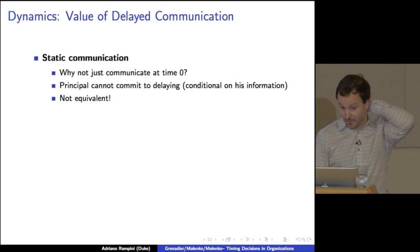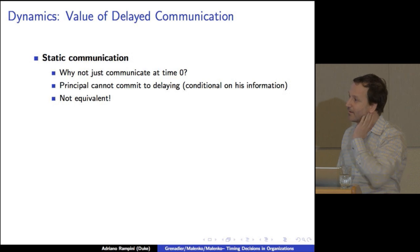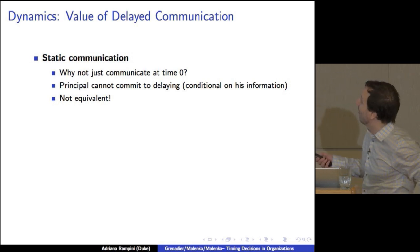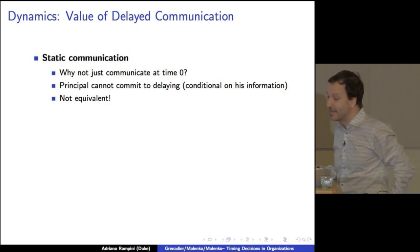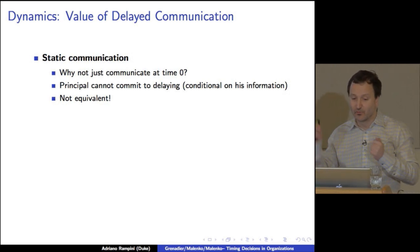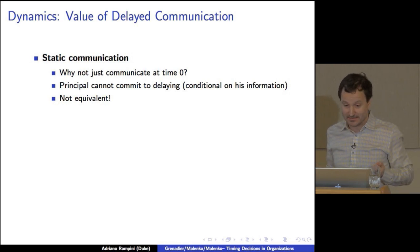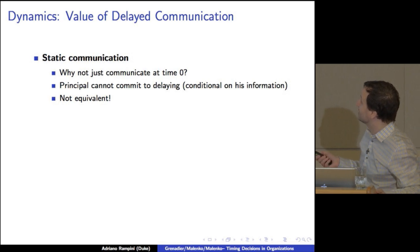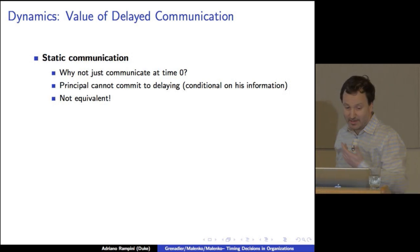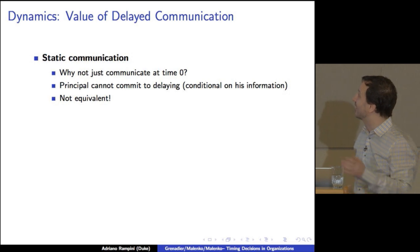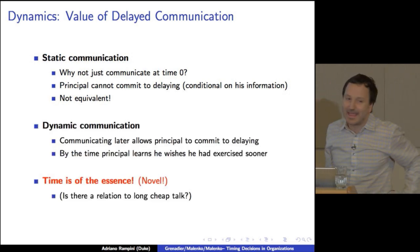All right. So let's think about the value of delayed communication. So one reaction you have is, I don't understand that the agent knows this state at time zero. Why not just communicate at time zero? Well, the issue is that the principal cannot commit to use information. So if you communicate at time zero, the principal will always do what is conditionally optimal if he has the authority to take the action. So the principal can never commit to delaying if conditional on his information exercise is optimal. So in fact, the static and dynamic case are not equivalent. The dynamic case, by communicating later, essentially, I can give you information then that allows the principal to commit because it doesn't know until such time as it is communicated.